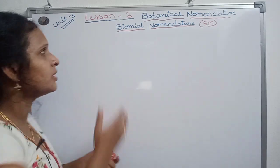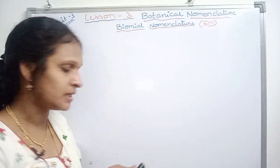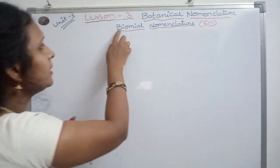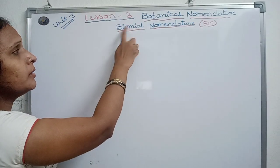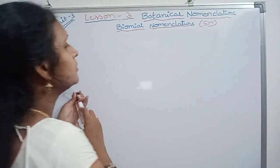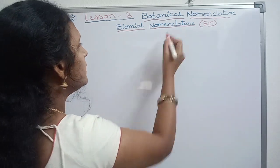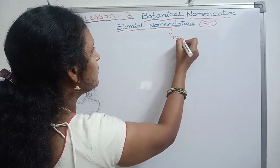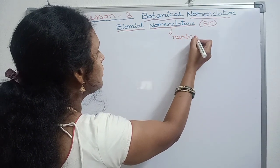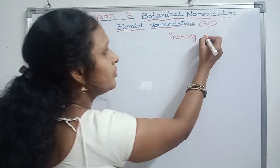What is binomial nomenclature? Binomial nomenclature is naming. We will discuss the naming of plants. The simple word is naming of plants.